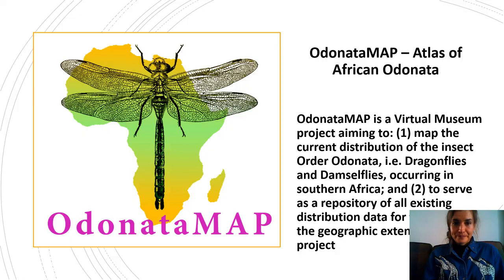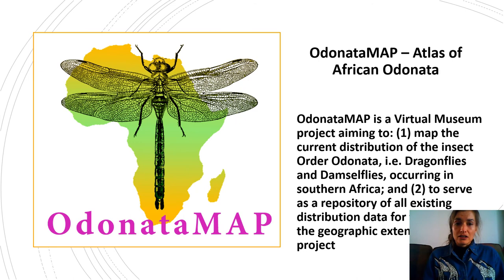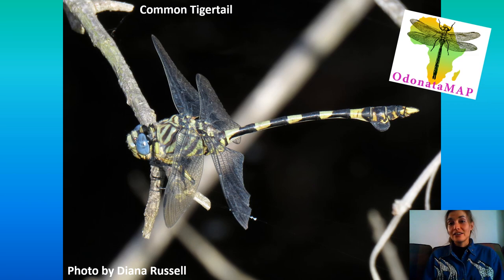Odonata Map is the atlas of African Odonata, the insect order of dragonflies and damselflies. It's a virtual museum project aiming to map the current distribution of the insect order Odonata, and to serve as a repository for all existing distribution data for these insects in Africa. Dragonflies and damselflies are extremely important water quality monitors, and mapping their distributions will help with conserving them and identifying where we need to focus our water conservation efforts. Here's a lovely example of a common tiger tail photographed by Diana Russell.